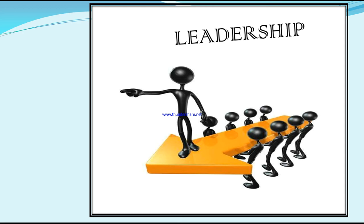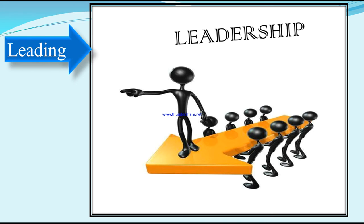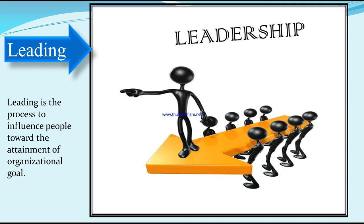Now, leadership. In the picture we can see some workers, and one person is in front directing towards the goal — that is why it is called leading. The person standing above is trying to lead the others. We can also see the subordinates that the leader is balancing. Leading is the process to influence people toward the attainment of organizational goals.